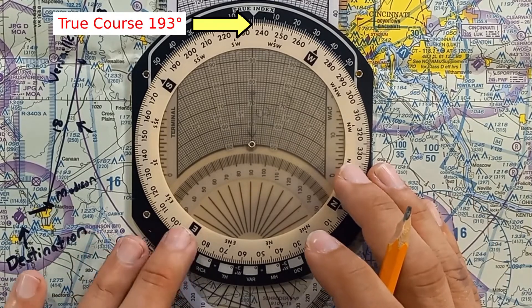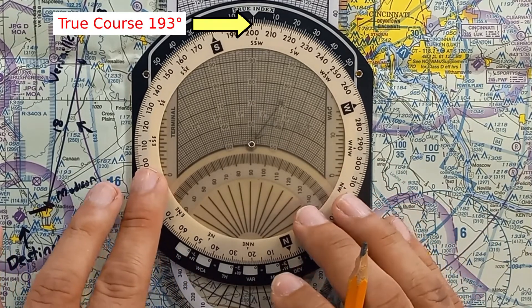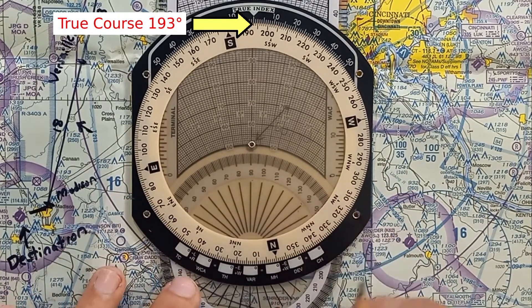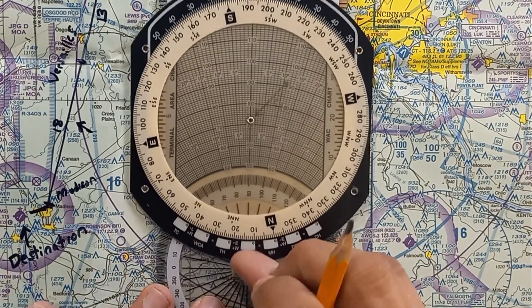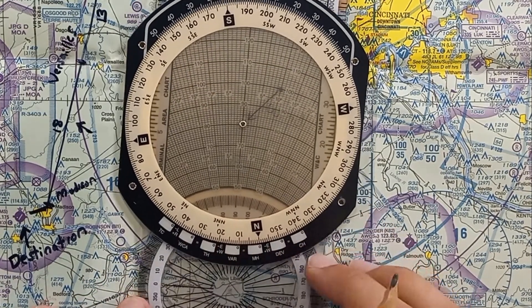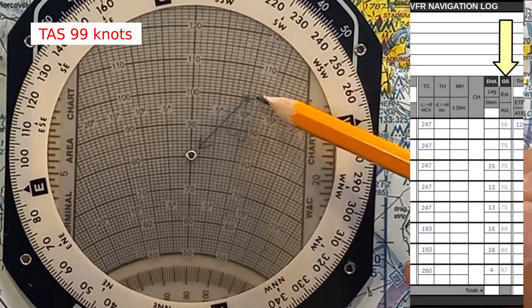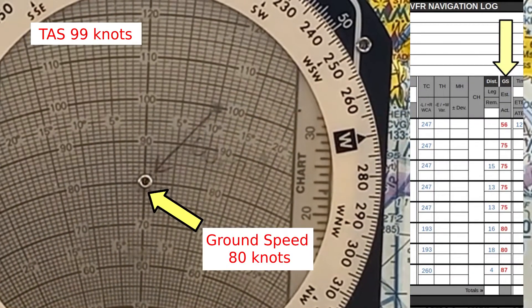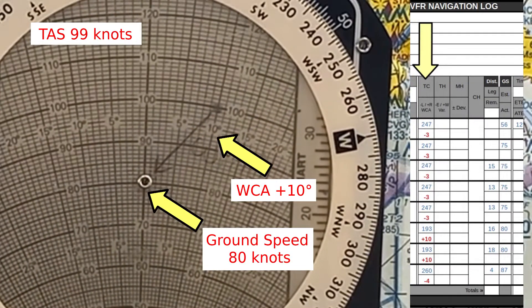Now rotate your true course under the true index. The arrow is now a visual representation of the wind's orientation relative to your direction of flight. Line the start of your wind arrow up with your aircraft's true airspeed. Your ground speed now appears under the center hole and your wind correction angle is read from the curved scale.